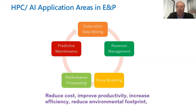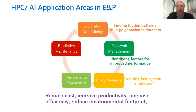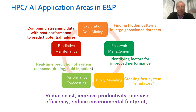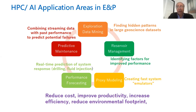The first slide shows different stages of E&P that use HPC and AI for various purposes. Starting with exploration, we collect large amounts of data and look for specific trends that might give us hints about where potential hydrocarbons are. We do that through data mining, imaging, and a lot of other operations.